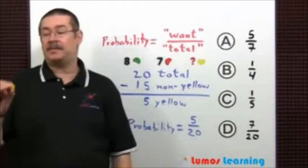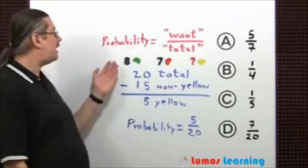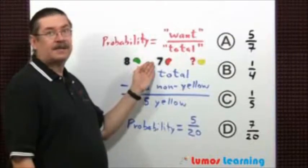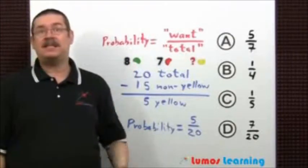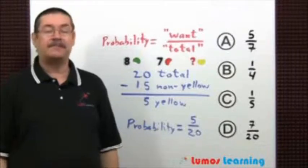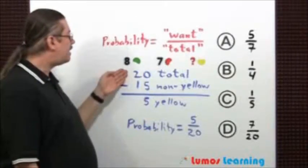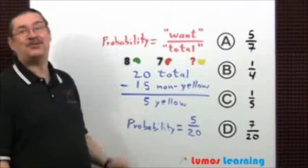Well, I'm not told how many yellow jelly beans are in the bag, but I do know there are 8 green and 7 red ones. If I add that up, I get 15 non-yellow jelly beans. If I subtract that from the total of 20, I get 5 yellow jelly beans.